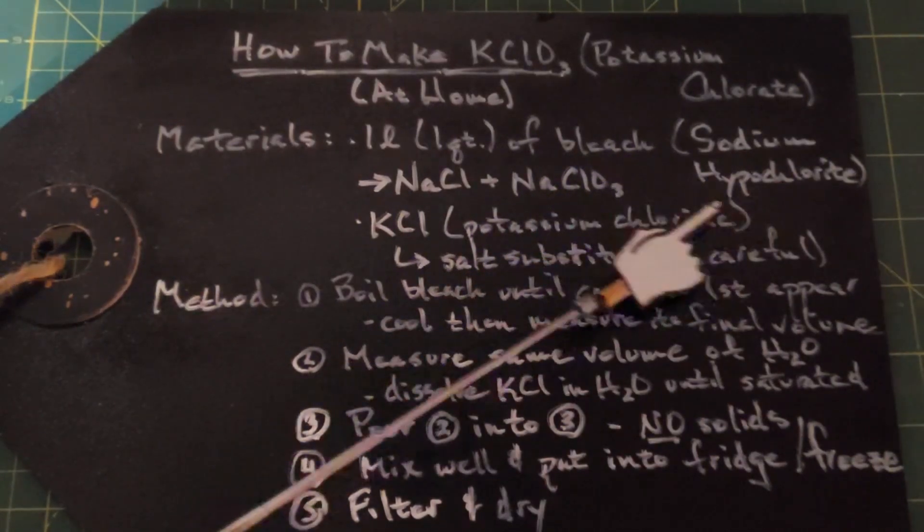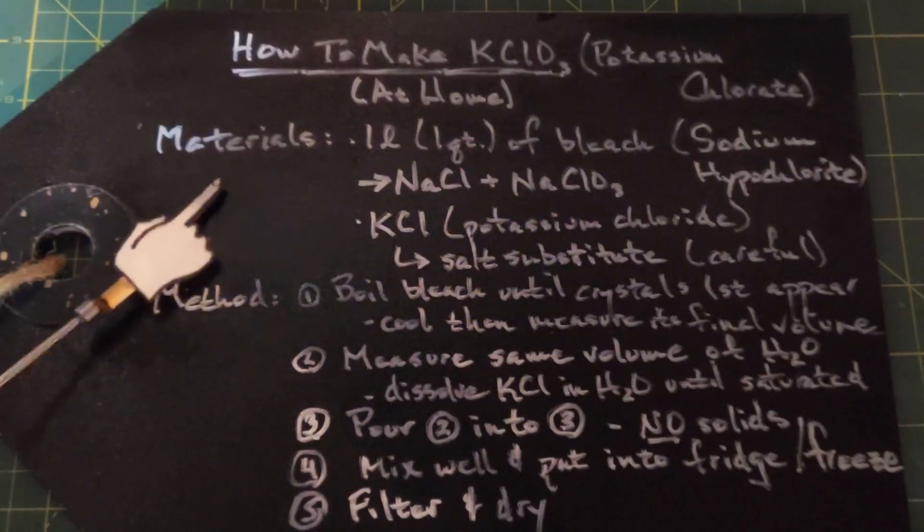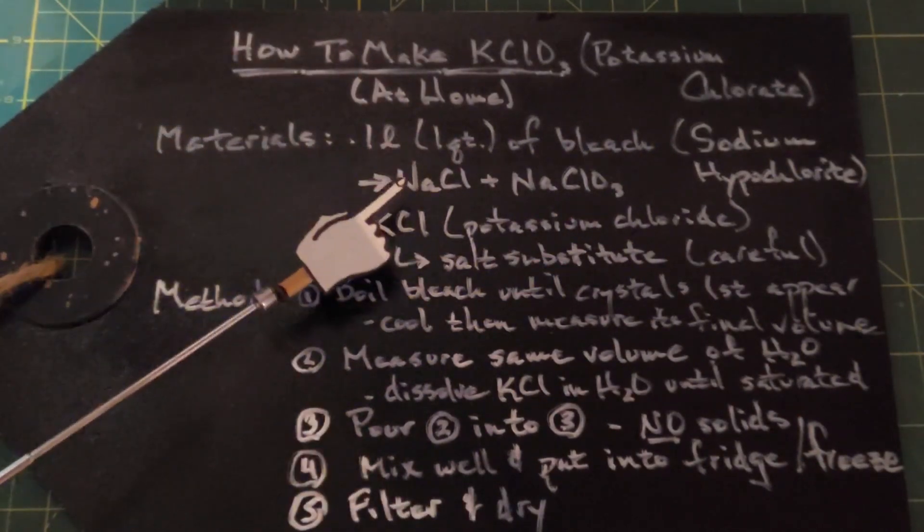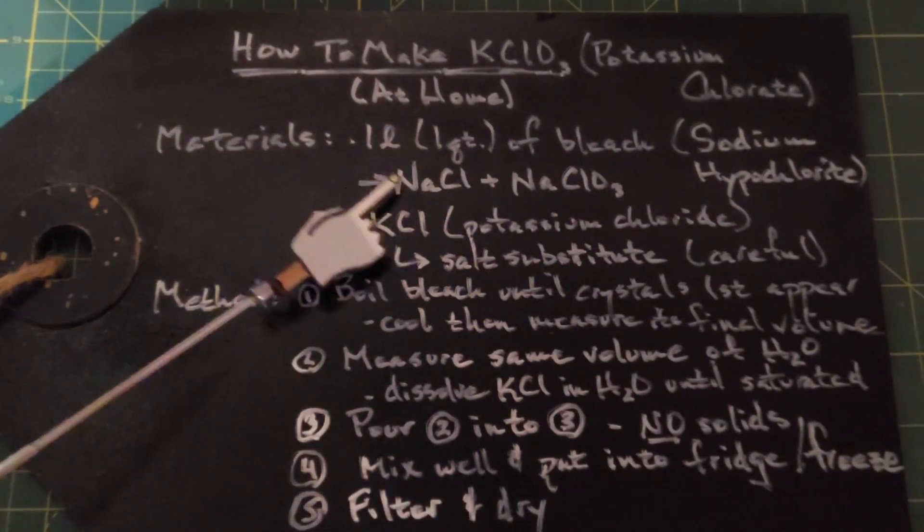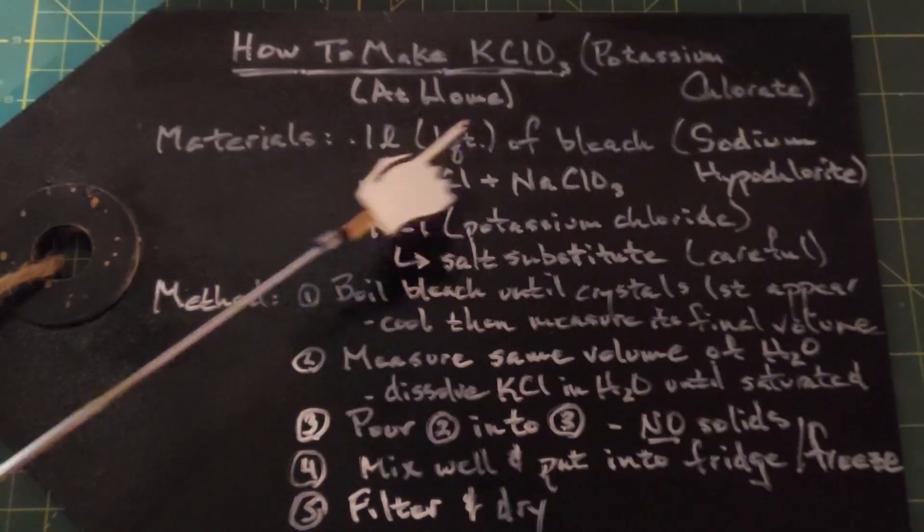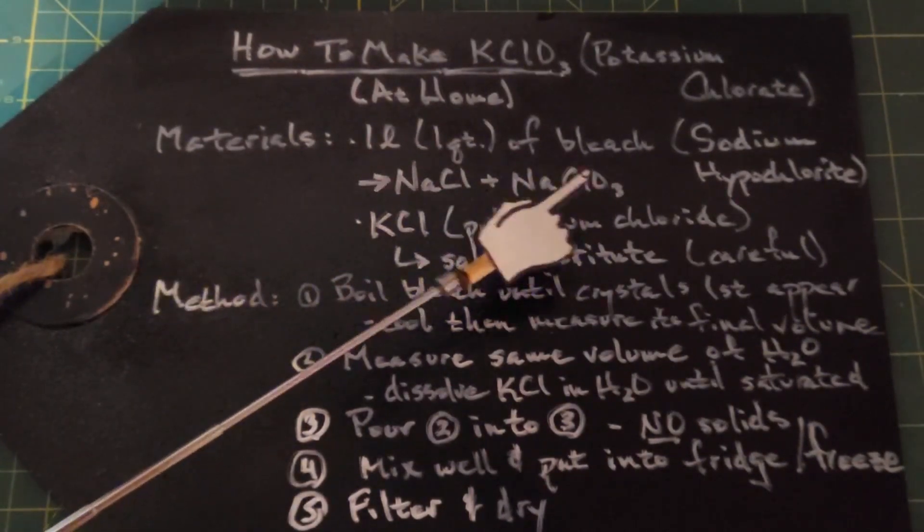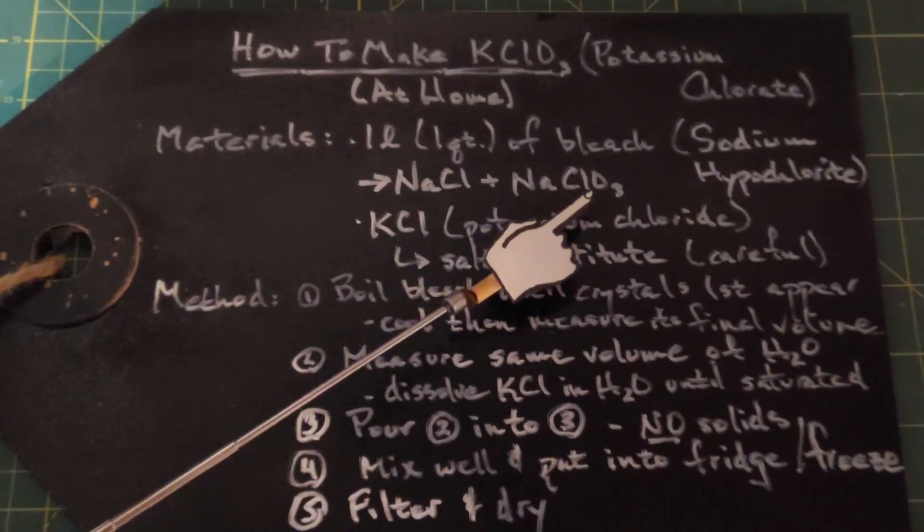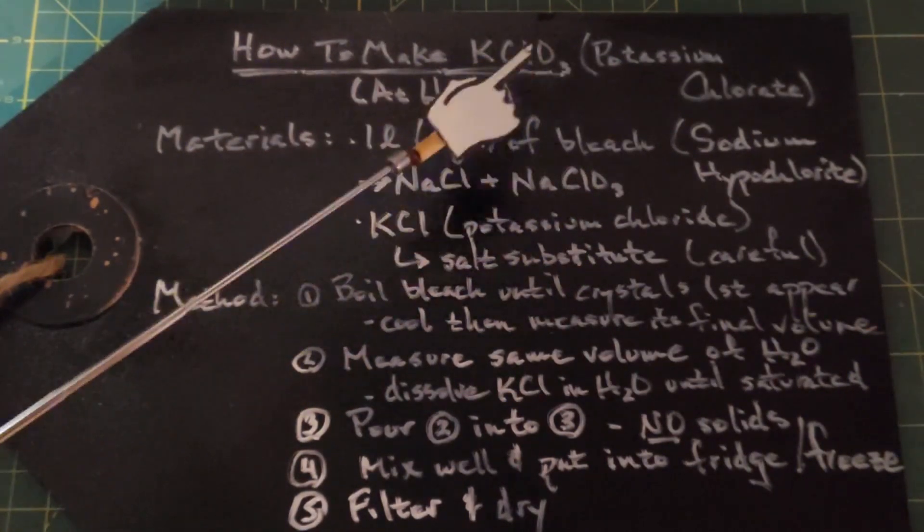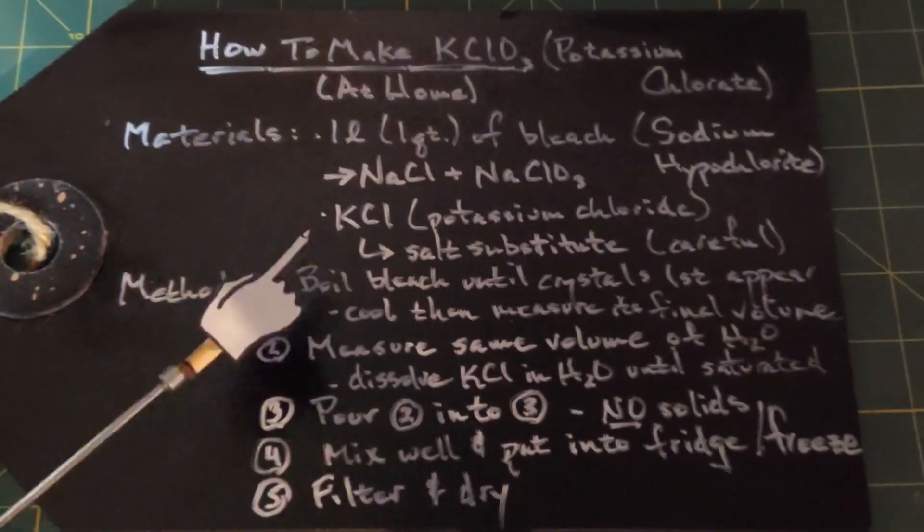When you heat it, it breaks down into two components. One is sodium chloride, which is salt, and the other one is sodium chlorate. You can see that with the sodium and the chlorate here. If we swap that sodium out, we'll have potassium chlorate.